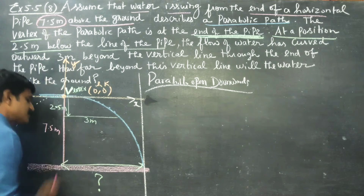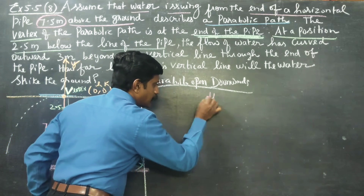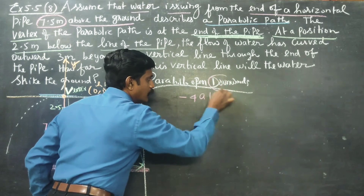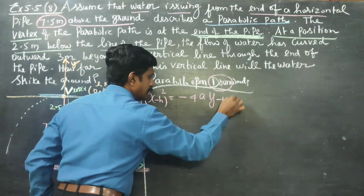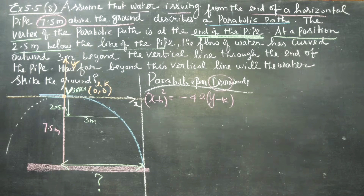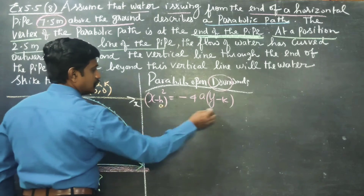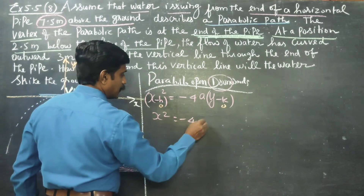The line of symmetry is the y-axis. For an open downward parabola, x squared is negative, so x squared equals minus 4ay. The vertex is at (0, 0), so the formula is x² = −4ay, where a is unknown.